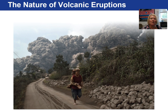This is a pyroclastic flow coming down the side of a volcano that has erupted. These are very dangerous volcanic eruptions that include hot ash, hot gases, and other sized particles as well. They will incinerate whatever they come in contact with.